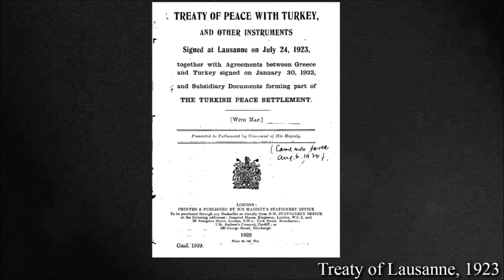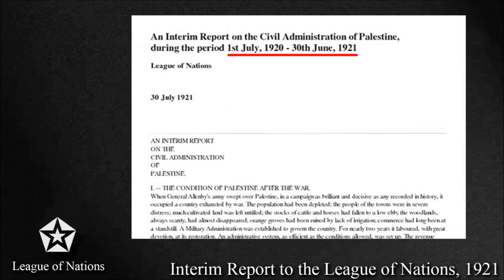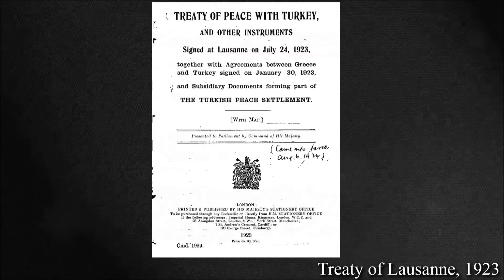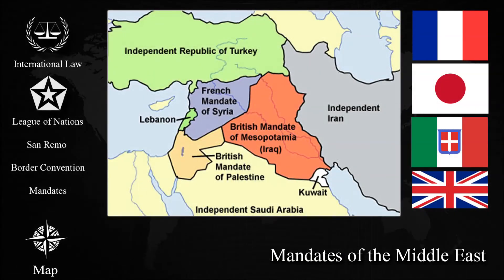More than that, the mandates formed by the League of Nations were already in effect. Therefore, according to international law, Turkey did not have sovereignty over the lands anymore. This explains why Palestine was not mentioned in the Treaty of Lausanne. So at this point, according to international law, Britain, France, Italy, and Japan definitely had sovereignty over Palestine. The United States did not, however, because they did not declare war on the Ottoman Empire.